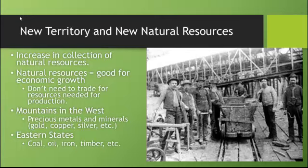This period in history is characterized by the increase in the collection of natural resources in the United States. These natural resources matter because it means you don't have to trade or import all the resources you need for production — most of it you can find inside the United States at a reasonable price. In the West, precious metals were discovered: gold, copper, silver, iron. In the Eastern States, you have coal mines in West Virginia and Pennsylvania, oil being discovered, iron, timber — in short, everything you need to begin a manufacturing economy.